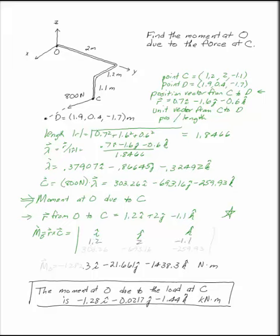You can have i, j, and k on the top. R goes on the second line and C goes on the third line. Once you've taken this cross product, you've got the moment at O.